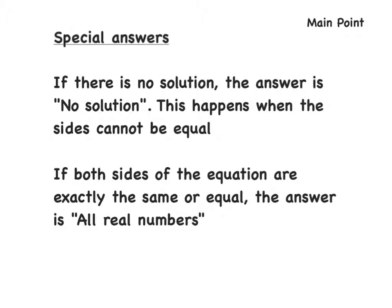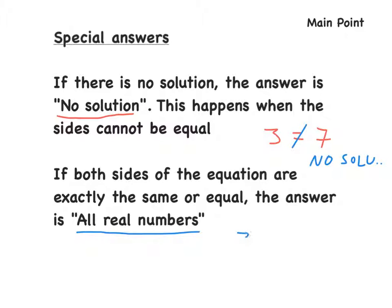So there are a couple of special circumstances. If there is no solution, the answer is simply "no solution" — it happens when the sides cannot be equal. For example, if you simplify all the way through and end up with 3 is equal to 7, those are definitely not equal, so the answer is no solution. Now, if both sides of the equation are exactly the same, the answer is all real numbers. For example, if you end up with 3 is equal to 3, then our answer is all real numbers.